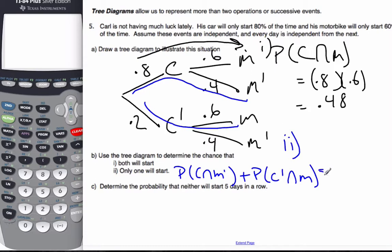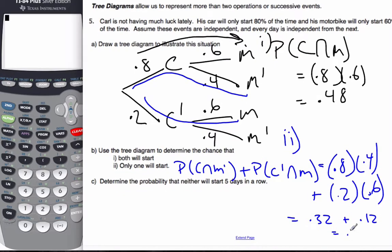And so then it's a matter of just multiplying across the tree. 0.8 times 0.4 plus 0.2 times 0.6, which will be 0.32 plus 0.12, which is 0.44 as the probability of that happening.